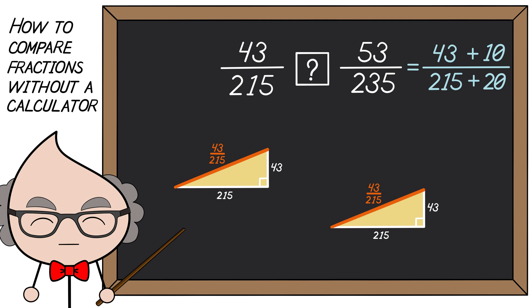We still need to add an additional length of 20 and an additional height of 10. That will be our second triangle. Now, if you draw a line from the start of the first triangle to the end of the second, you now have the slope of the right triangle created from the second fraction.